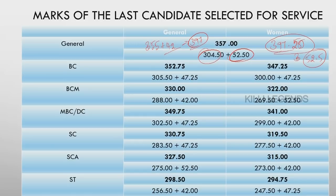If you look at the mark, you look at the mark in the same category. Now we will discuss the BC category. For feasibility, there is no particular intention behind taking BC. If you look at BC, the score is 352.75. For that particular candidate, the mark is 305.5, and 47.25 in the interview.